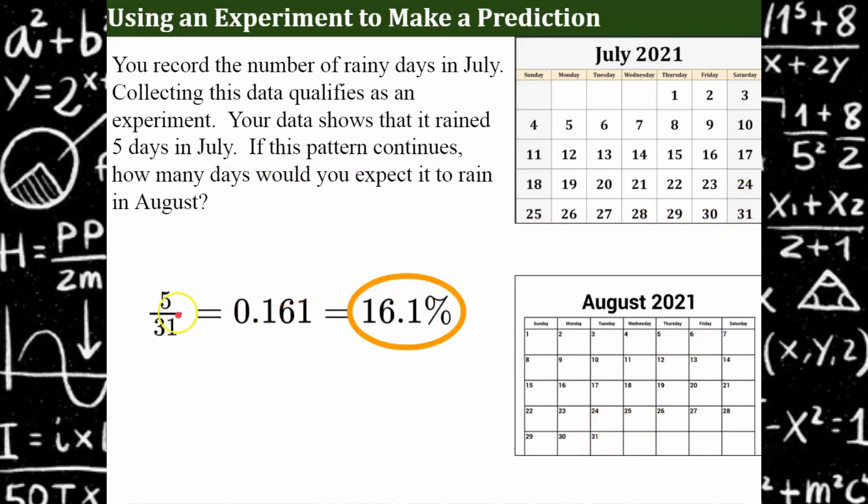We would expect that it would rain the same amount in August, 5 out of 31, if the pattern continued, which is 16% of the time. So 16.1% would be our expected relative frequency using our data we collected.